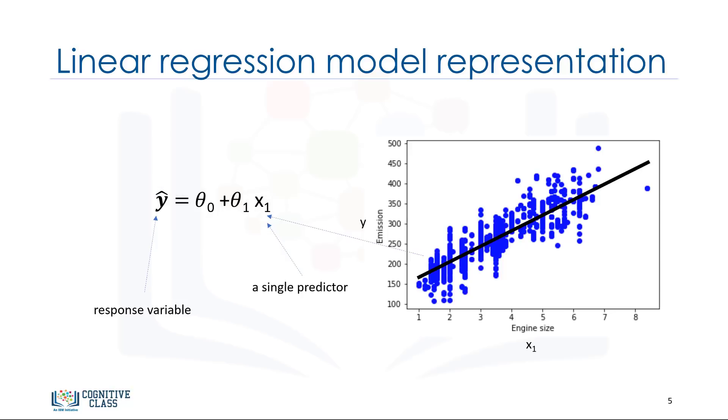You can interpret this equation as y hat being a function of x1 or y hat being dependent of x1. Now the questions are, how would you draw a line through the points, and how do you determine which line fits best? Linear regression estimates the coefficients of the line. This means we must calculate theta 0 and theta 1 to find the best line to fit the data. This line would best estimate the emission of the unknown data points. Let's see how we can find this line, or to be more precise, how we can adjust the parameters to make the line the best fit for the data.